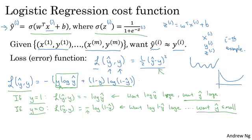Now, there are a lot of functions with roughly this effect, that if y is equal to 1, you try to make y hat large, and if y is equal to 0, you try to make y hat small. We just gave here in green a somewhat informal justification for this particular loss function. We'll provide an optional video later to give a more formal justification for why in logistic regression we like to use the loss function with this particular form.